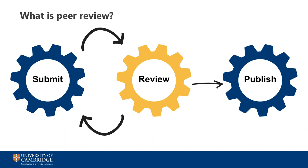Peer review aims to independently verify the claims made in the research to ensure they stand up to scrutiny, that the appropriate methods were used and that the conclusions reached are correct. This is an important part of the research process, as readers need to know that they can trust the material they're looking at. Academic research is not only used in other academic research, but as the basis for wider changes to society such as medical interventions, building technologies and government policy. You need to know that these developments are built on robust research, especially in an era when it's easier than ever to share materials online.